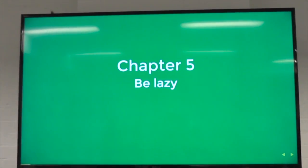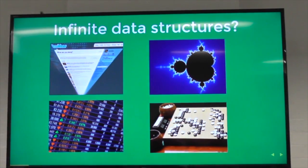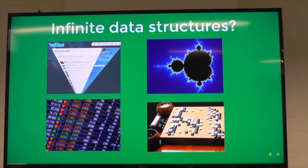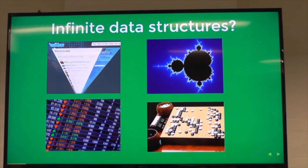Chapter five is all about laziness. My key takeaway from this chapter is: what is the whole point of laziness? Laziness allows you to operate over data structures that are infinite, and I think that's quite remarkable. It allows you to write code that doesn't need to really think about the fact that that data structure is infinite.